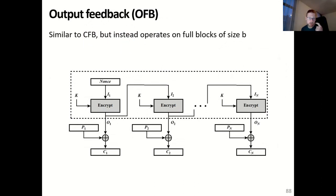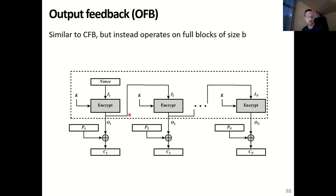Output feedback mode is similar to cipher feedback mode, but instead operates on full blocks of size B, so it does not transform the block cipher into a stream cipher. An initialization vector, here called a nonce, is first encrypted, and that result is XORed with our full-sized input block P1 to obtain ciphertext block C1. The output of the encryption algorithm is also used as input for encryption in the second step. As you can see, the entire part within the rectangle can be calculated in advance because it does not depend on our plaintext block, only on our key and our nonce. That means encryption can be done more efficiently as this entire block can be pre-calculated — only the XOR operation needs to be done at runtime.